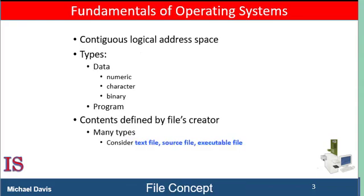Computers store information on various storage media, such as non-volatile memory devices, hard disk drives, magnetic tapes, optical discs, and so on. For the computer system to be convenient to use, the operating system must provide the user with a logical view of the stored information. The operating system abstracts from the physical properties of its storage devices to define a logical storage unit known as the file. Files are mapped by the operating system onto the physical devices. These storage devices are usually non-volatile, so the contents are persistent between system reboots.